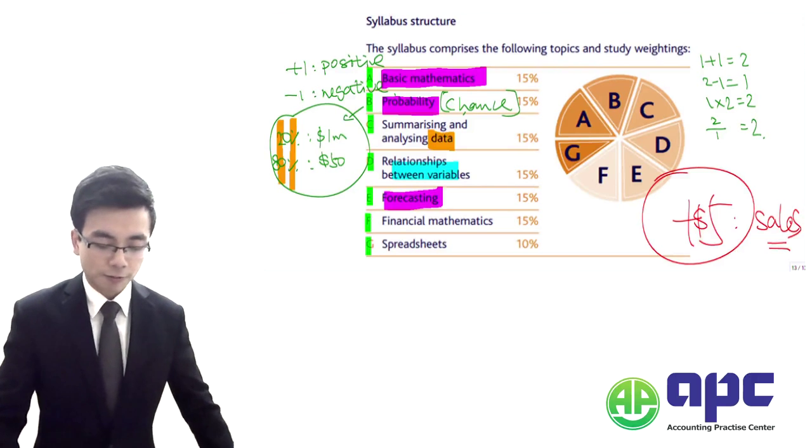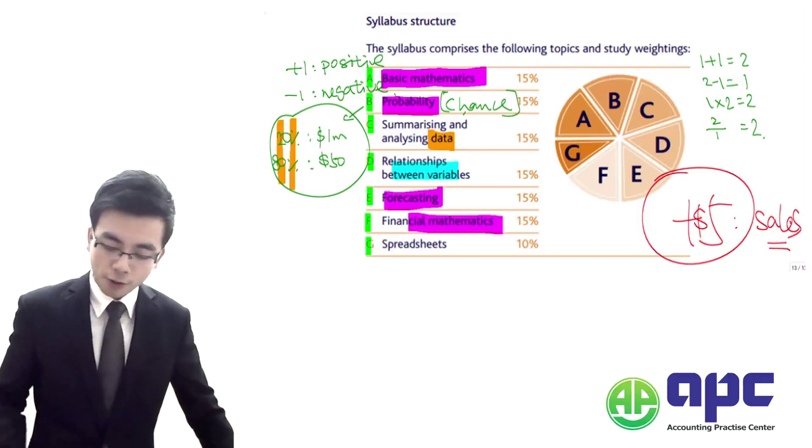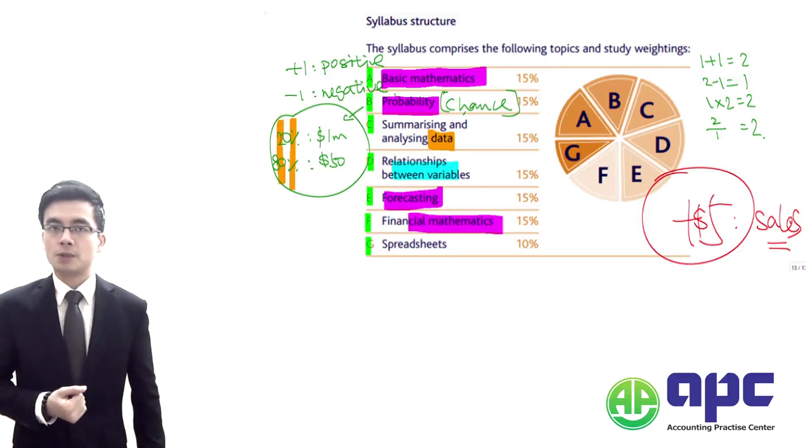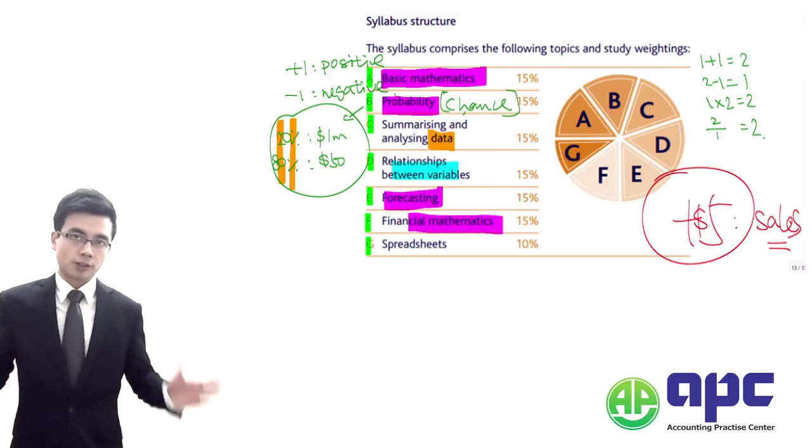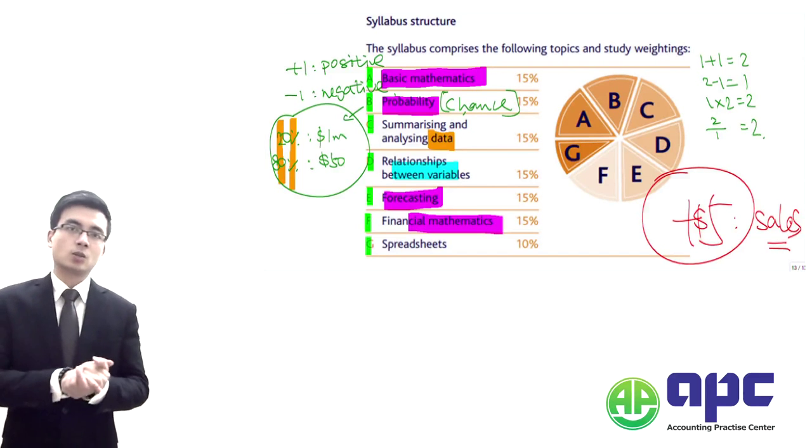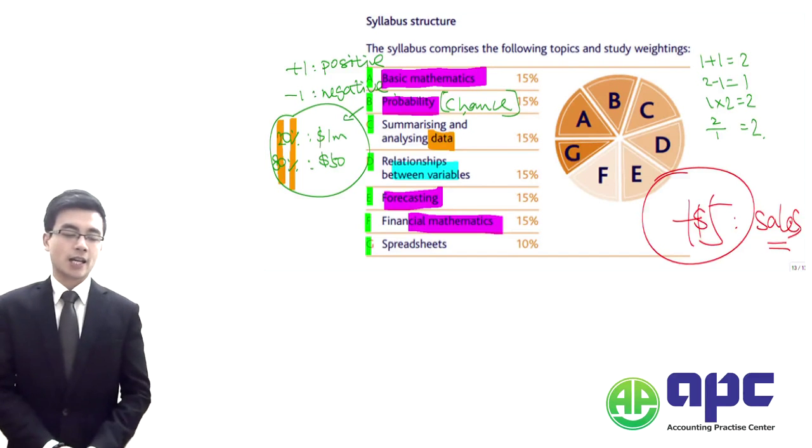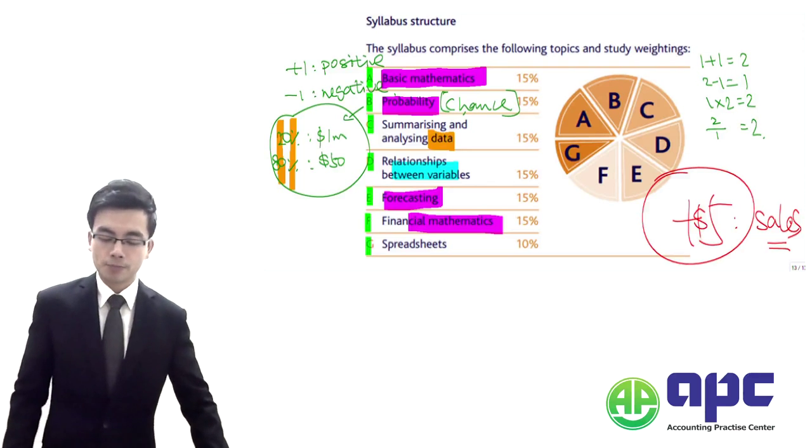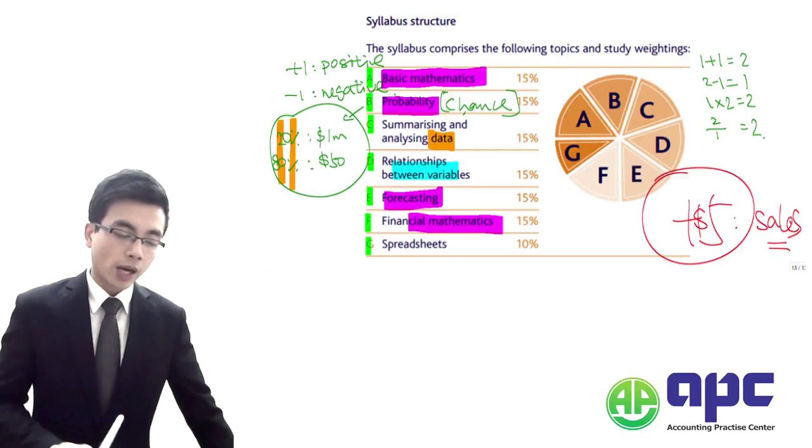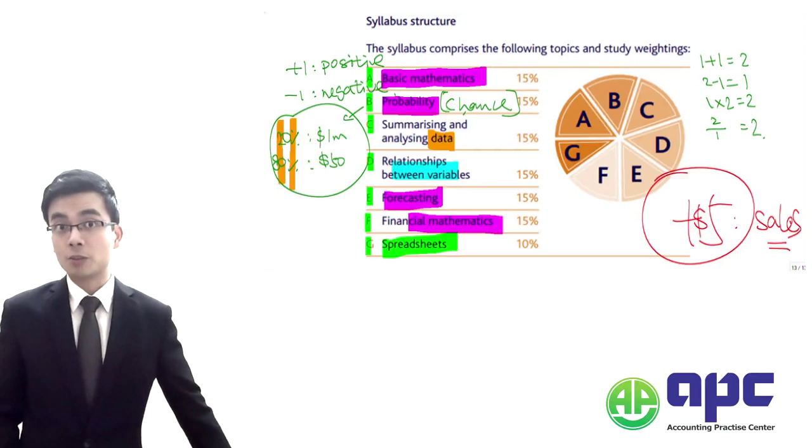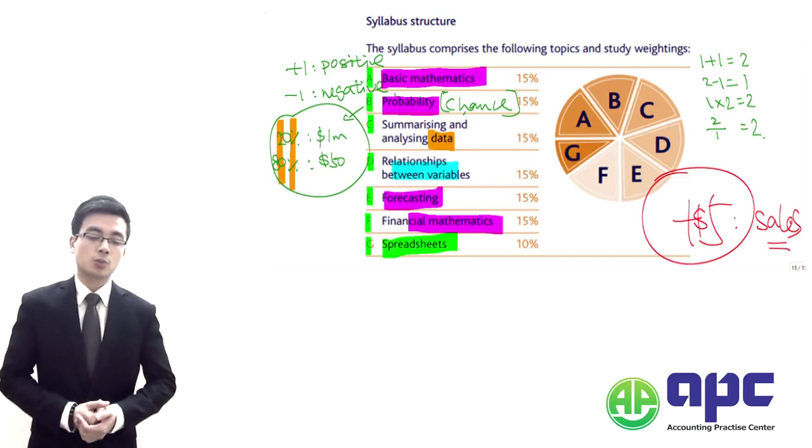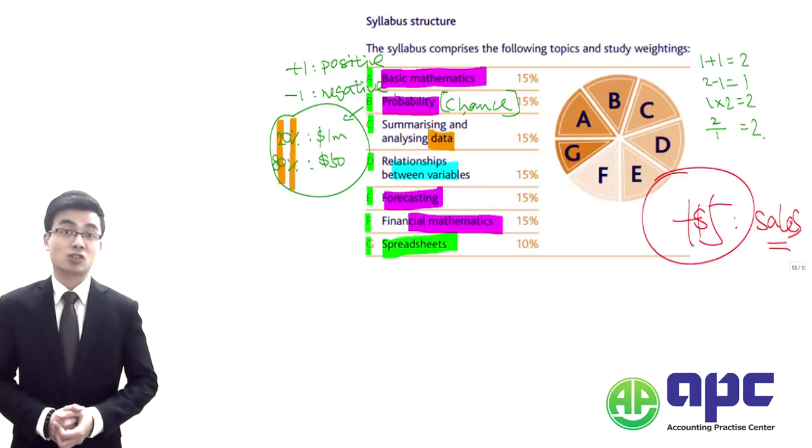And also, we're going to look at the financial mathematics, where we're going to focus upon some of the basic analysis regarding the investment appraisal techniques. For example, we're going to use the discounting or non-discounting techniques, etc. Of course, we're going to detail that into the section F. And finally, we have to be familiar with the spreadsheet as well, particularly for the Microsoft spreadsheet. And of course, some of the applications questions will be detailed in the section G as well, making sure that you are comfortable with that.